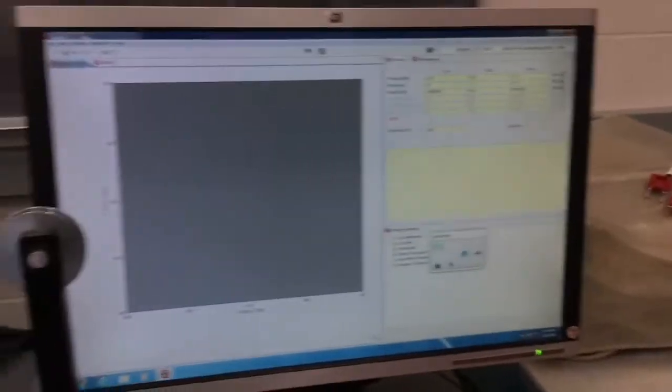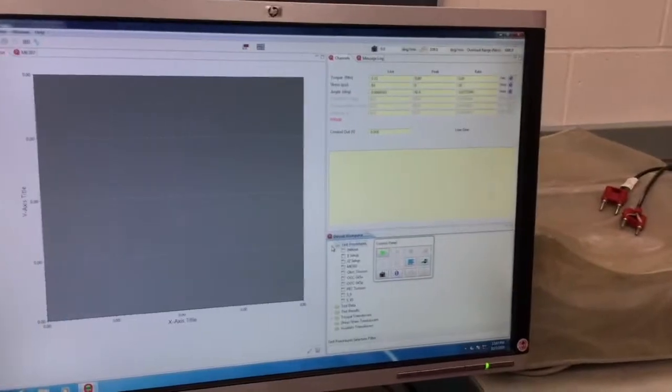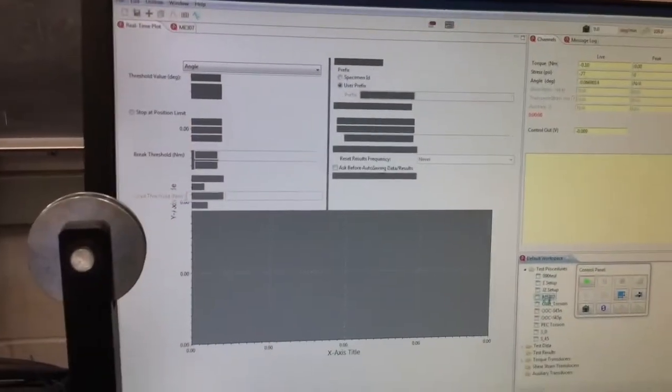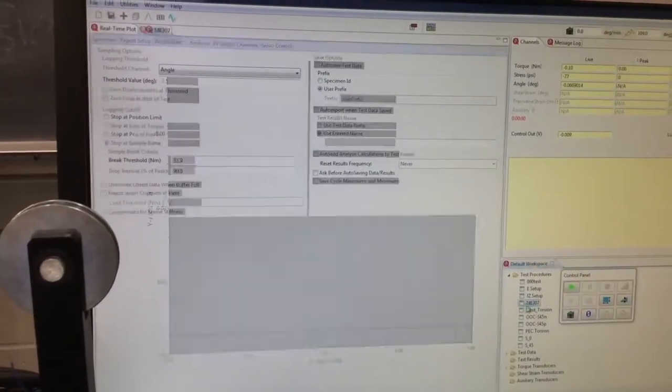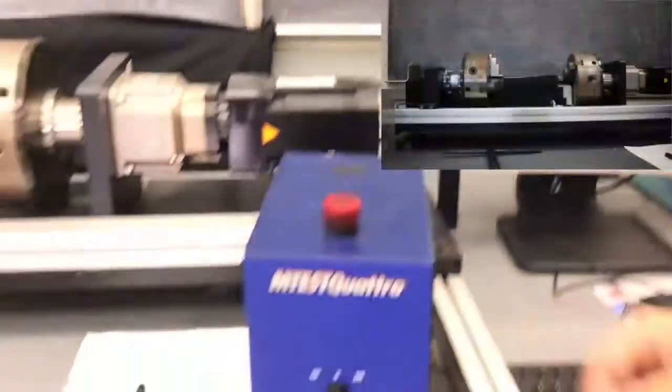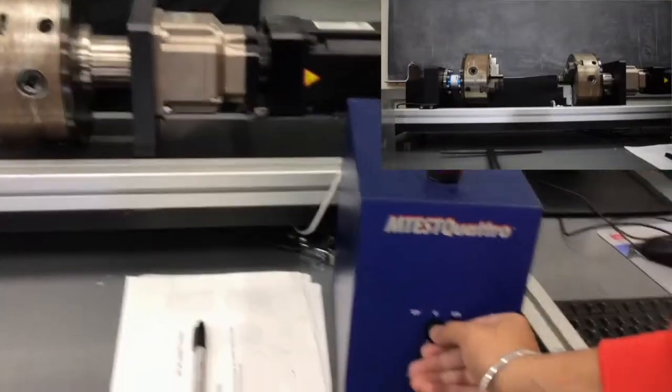The software here is not quite as intuitive as the MTS software but it's fine, you'll figure it out if you use this for your project. So you kind of open the 307 folder and then there's a method there for a torsion test. A lot of variables like the rate at which it twists and when to stop.